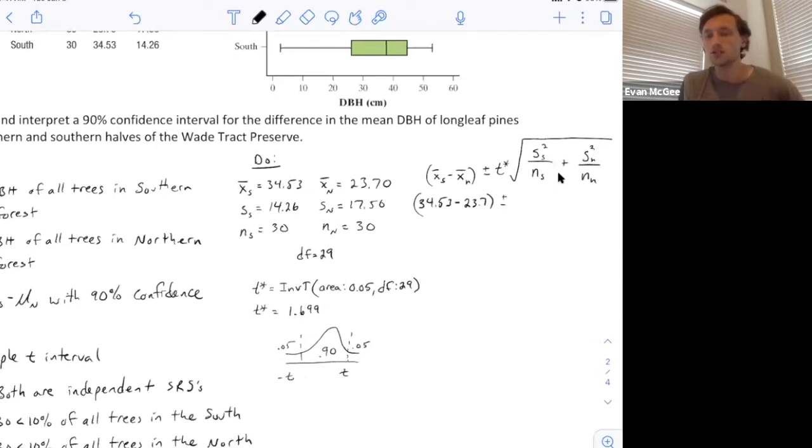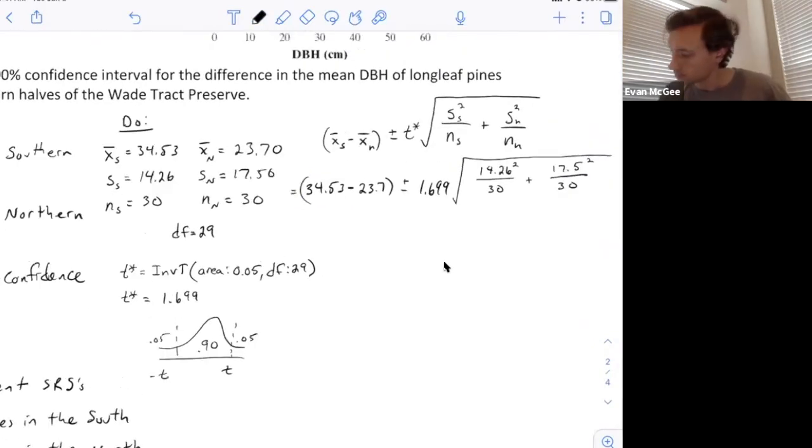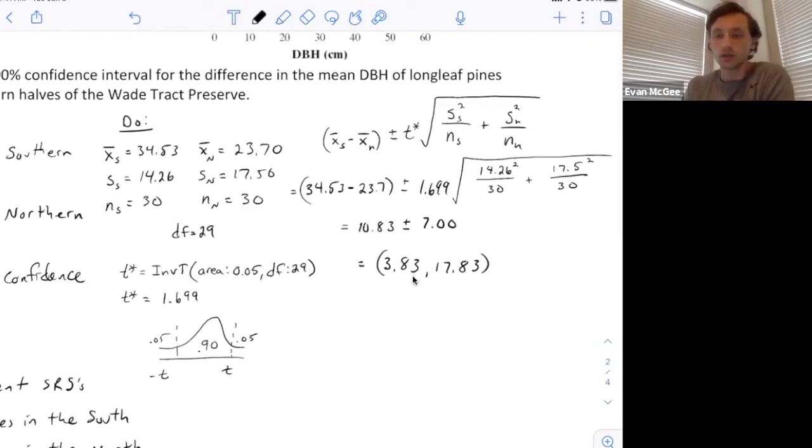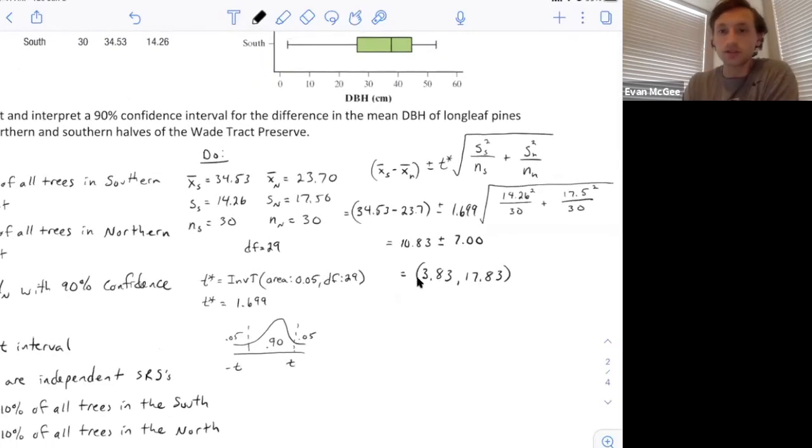I'll plug in 1.699 and the standard deviations to figure out the confidence interval. After plugging in our critical value and standard error, we get a point estimate of 10.83 plus or minus a margin of error of 7.00. Adding those together, we get our interval from 3.83 to 17.83. We're 90% confident that the difference between the mean DBH from the south and the north is between 3.83 and 17.83 centimeters.